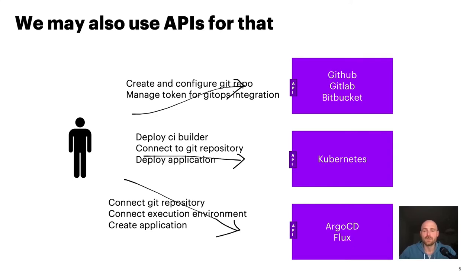We can do that manually, but we can also use APIs for that. There are a couple of systems — I've listed some popular ones here. For example, GitHub, GitLab, and Bitbucket offer an API for Git repos. For the execution environment there's Kubernetes, because we are at KubeCon. And for GitOps there's Argo CD and Flux, which are pretty popular. All of those offer an API for configuration, and in theory we can implement those APIs in custom software which automates the steps mentioned.